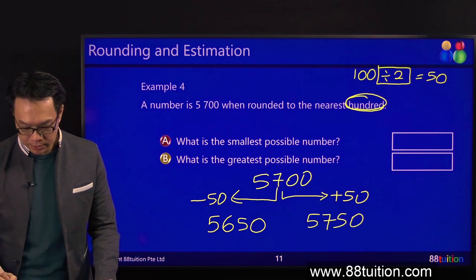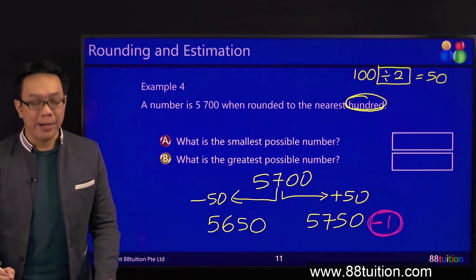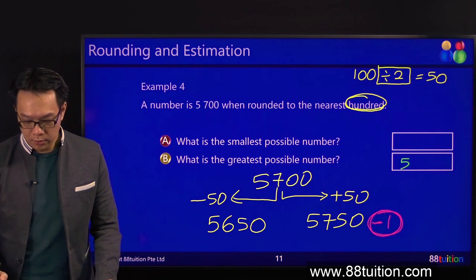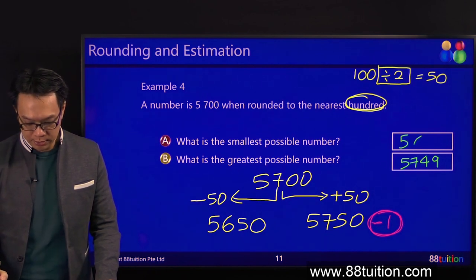What is it? Minus 1. 750 minus 1 will give you 49. 50 minus 1 is 49. The smallest, 5,650.